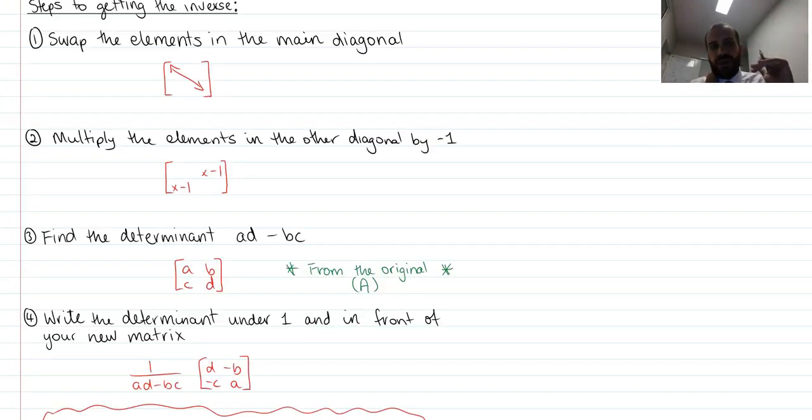Here's our handy step-by-step guide to getting the inverse. Step 1, swap the elements in the main diagonal. If we've got A, B, C, D, we're going to swap the elements. So A, B, C, D, we're going to swap those elements, and what we get now is D, A, B, C.